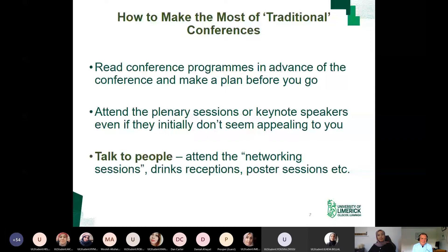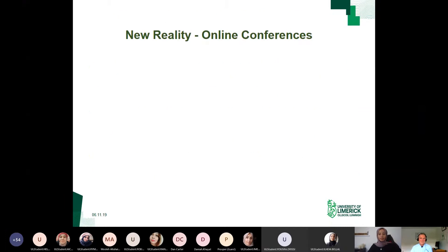Just in terms of what I call traditional conferences: it's a good idea to read the conference program in advance and make a plan before you go. A lot of people don't do this. You could arrive at a conference without a plan and find that there's a paper you want to attend that clashes with another one, or that you've planned to meet somebody for dinner when a paper you'd really like to see is on. So take the program in advance, look at who is speaking, and decide which papers you intend to attend.